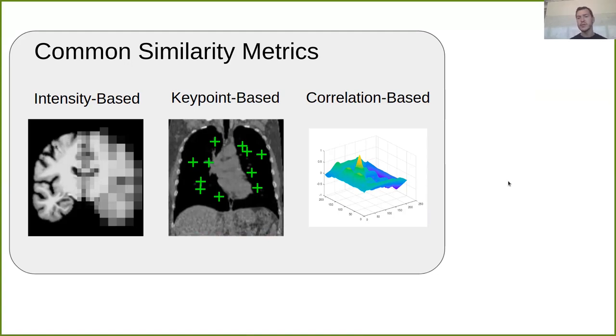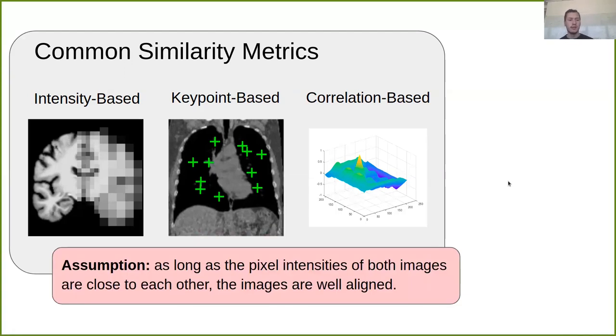But both mean squared error and normalized cross correlation focus on aligning pixel intensity values. So the assumption here is that as long as the pixel intensities of the two images match or are strongly correlated, then these images are well aligned. But I want to challenge this assumption. I think image registration should align areas of similar semantic importance, instead of relying on just matching pixel intensities. Because pixel intensities are often not a good description of the actual meaning of parts of an image.